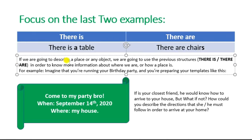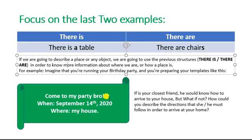Ahora, si vamos a describir un lugar o un objeto, vamos a usar las estructuras previas — 'there is' y 'there are' — con el fin de saber más información acerca de dónde estamos o cómo es un lugar. Por ejemplo, imagínate que estás llevando a cabo tu fiesta de cumpleaños y estás preparando invitaciones como estas: 'Ven a mi casa, amigo — 14 de septiembre del 2020, en mi casa.' Solo si es tu amigo cercano él probablemente sabría cómo llegar, pero ¿qué pasaría si no? ¿Cómo le describirías las indicaciones para llegar a tu casa?